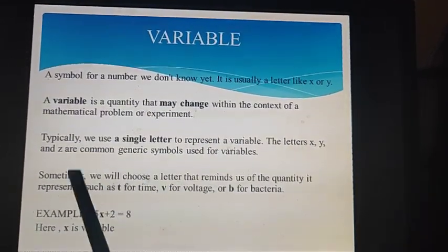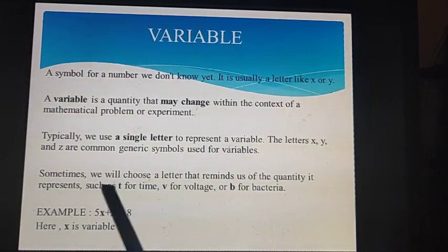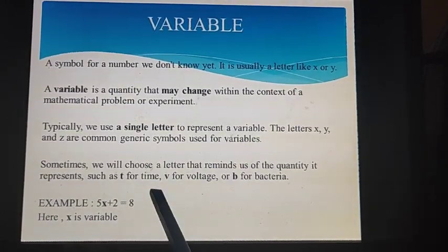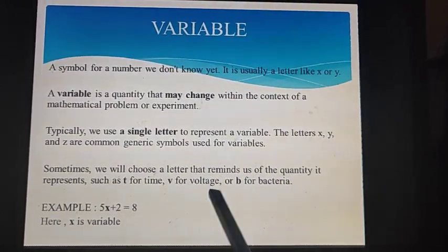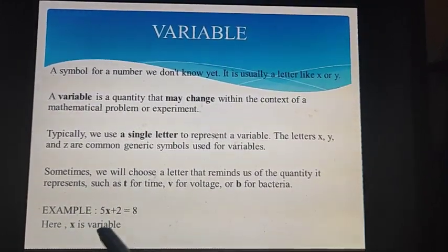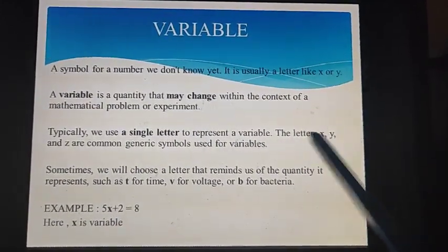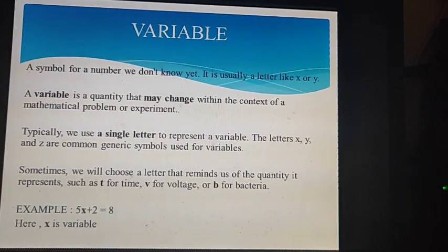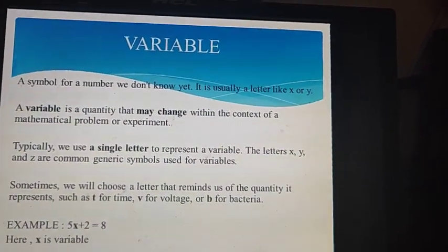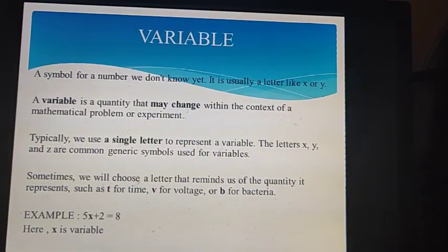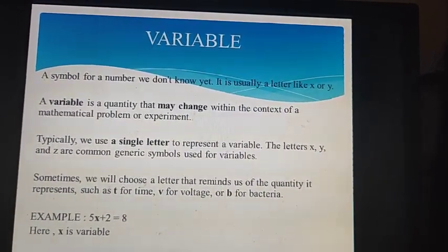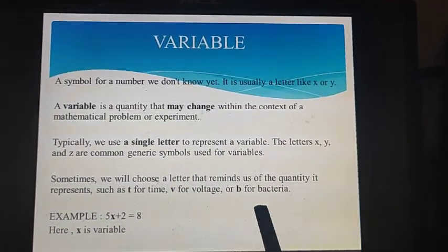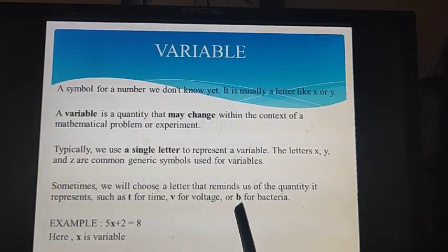Sometimes we will choose a letter that reminds us of the quantity it represents, such as t for time, v for voltage, or b for bacteria. It is not compulsory to use only x, y, and z. We can use other letters which are helpful to identify the quantity we are using. For example, for time we can use t as our variable, for voltage we can use v, and for bacteria we can use b.